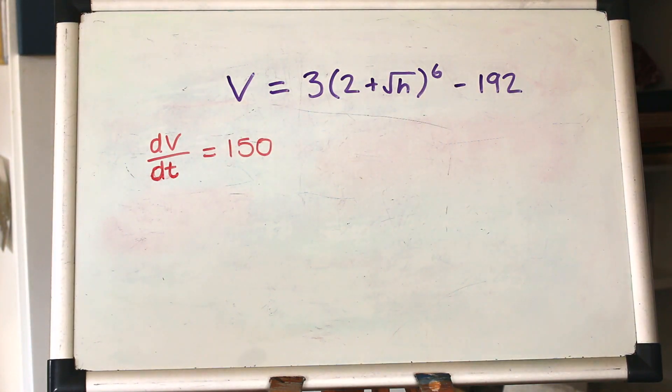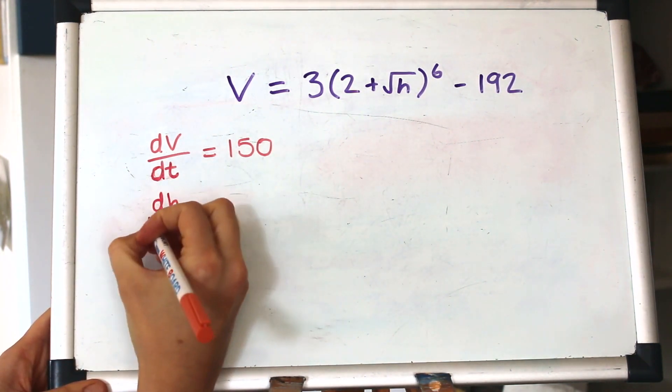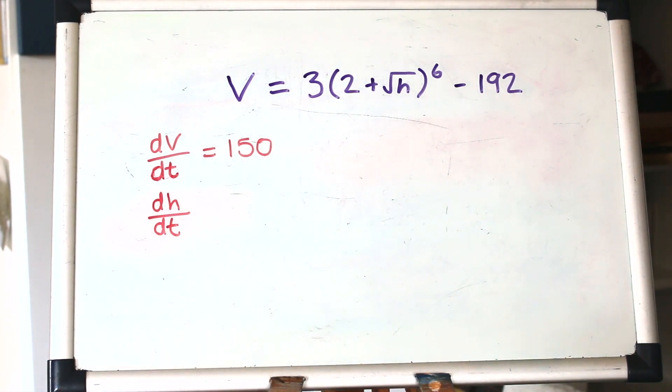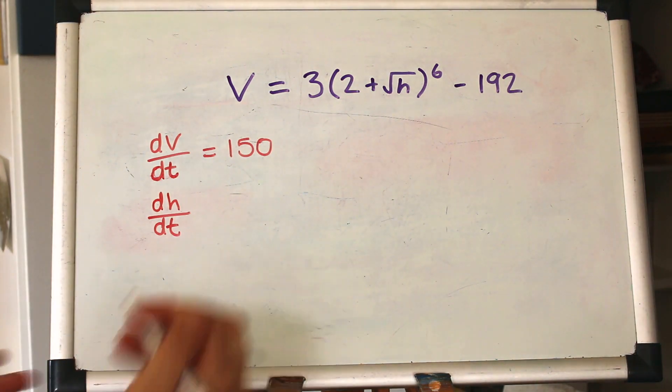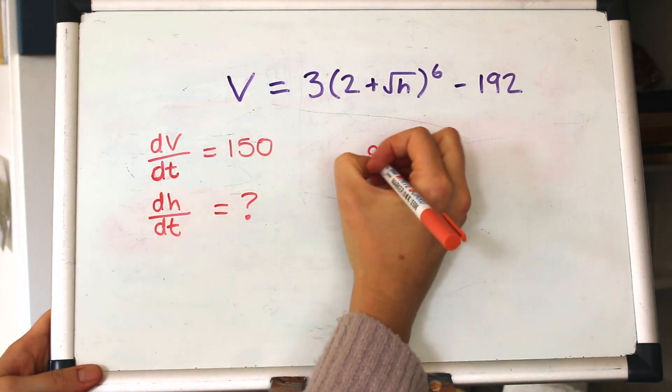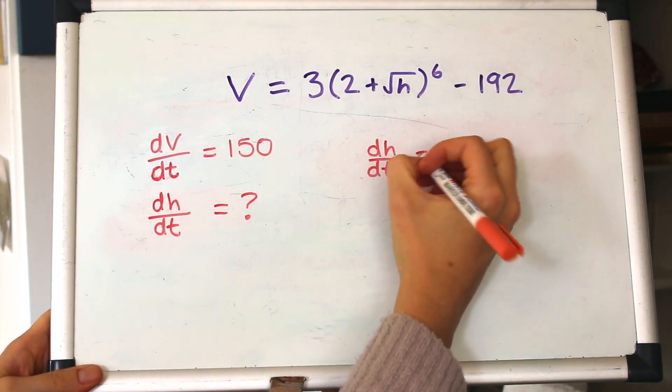And what are we being asked for? We're being asked for the rate of change of the depth of water. The depth in this question is given by an H, so we're looking for the change of H over time, the rate of change of H. So that's dH by dt, I think that's in meters per hour. Yeah, so we're being asked for dH by dt, and now we can set up our equation to figure out what else we need.